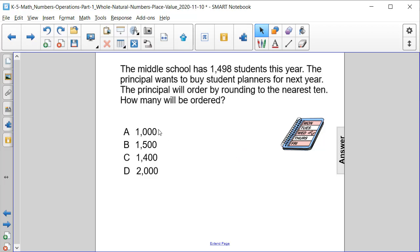Is it A: 1,000, B: 1,500, C: 1,400, or D: 2,000?